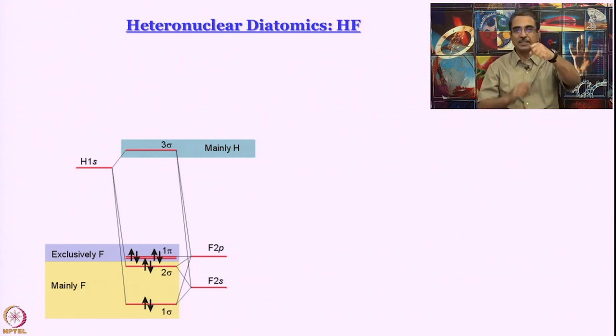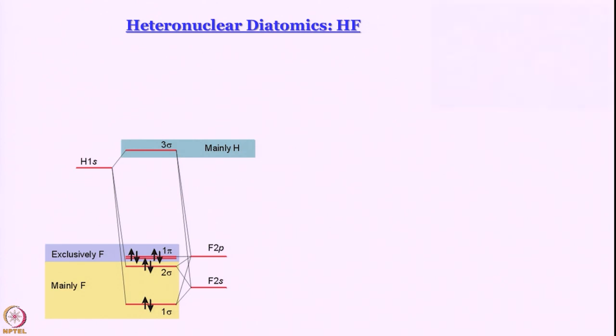The only orbital available on hydrogen is 1s; others are very high energy. For fluorine we have 2px, 2py, and 2pz. The 2pz provides the sigma interaction, and there may be a 2s contribution as well. But 2px and 2py have nothing of comparable energy on the hydrogen atom, so these px and py orbitals do not participate in any linear combination for forming molecular orbitals.